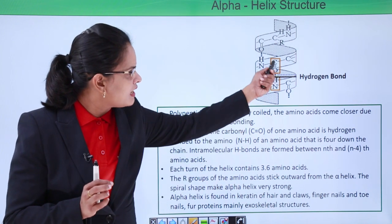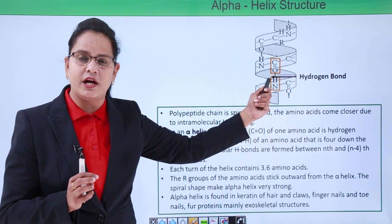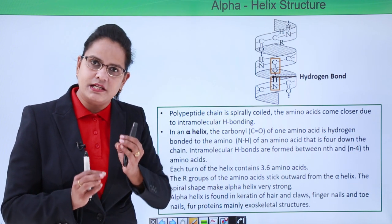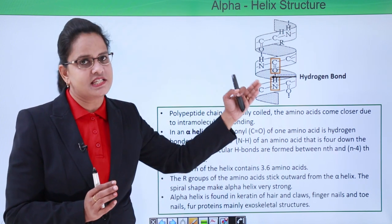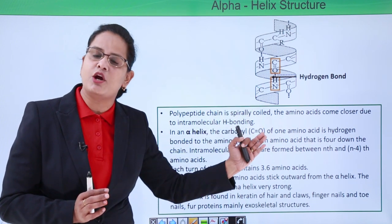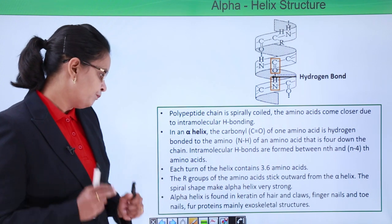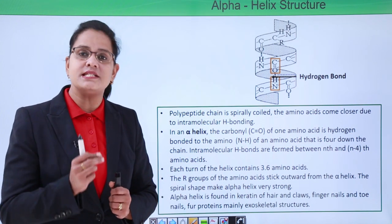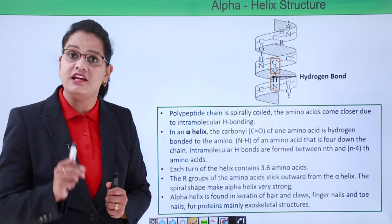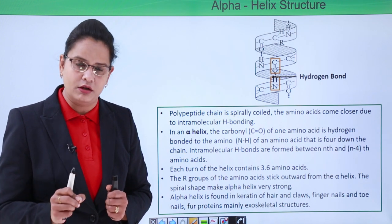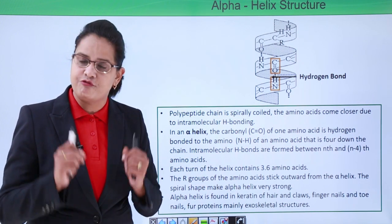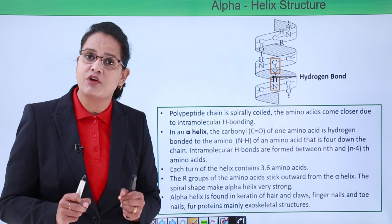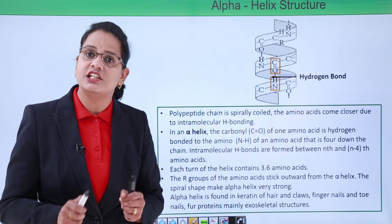Why 3.6 amino acids? This means three amino acids are complete in one turn, and there is one amino acid of which 0.6 part is in one turn and 0.4 part is in the next turn. This alpha helix, because it is spirally coiled, is very very strong.